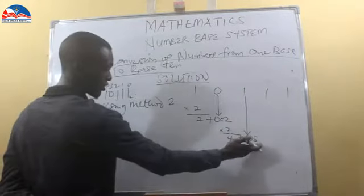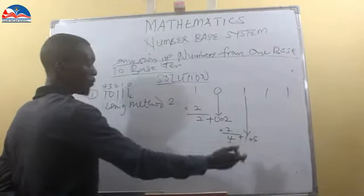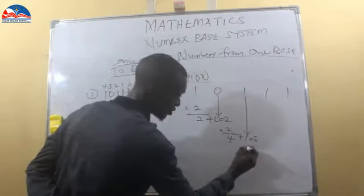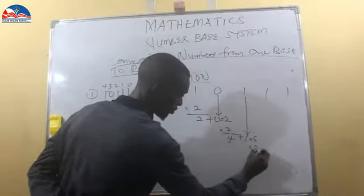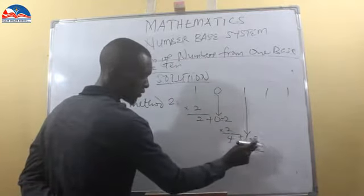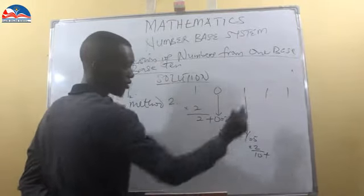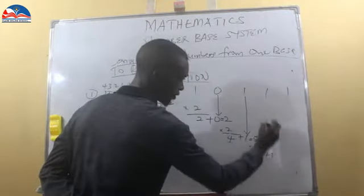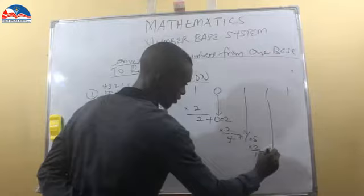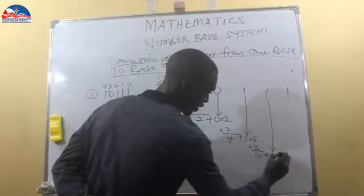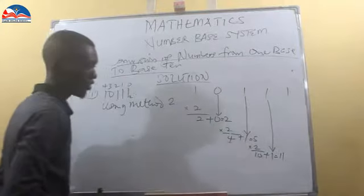So this is our result. Now we multiply it again by 2 as we did here. 5 times 2 gives us 10, plus 1, this will give us 10 plus 1 gives us 11.